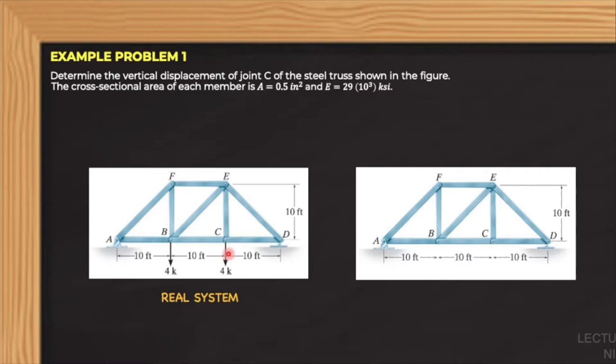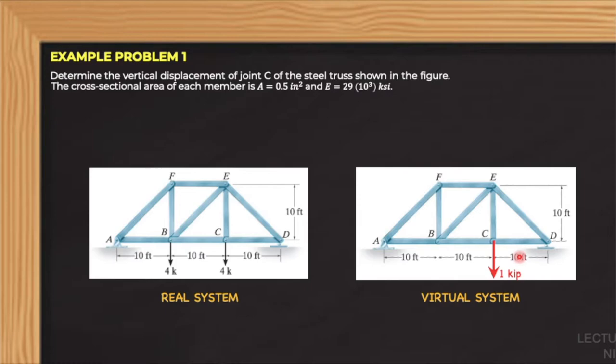In this virtual truss, we should apply a vertical unit load at joint C since the vertical displacement at C is asked. Since all the external loads in the real truss are downwards, it is safe to assume that joint C will be displaced downwards. So we will apply a downward vertical unit load at joint C.